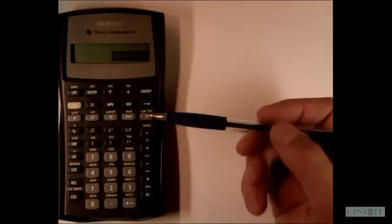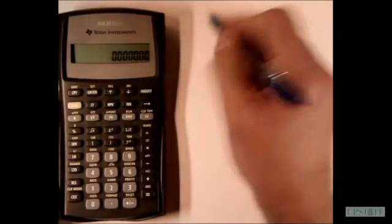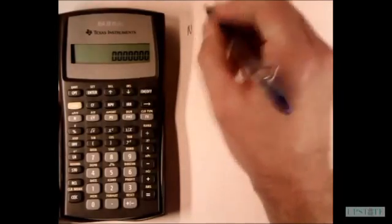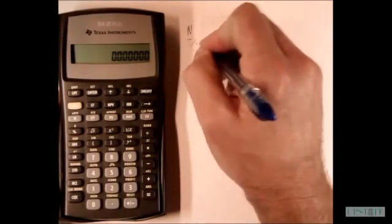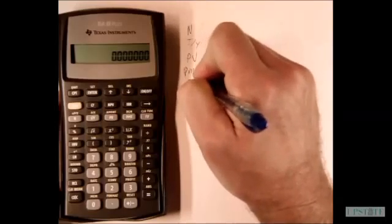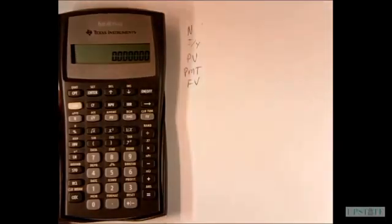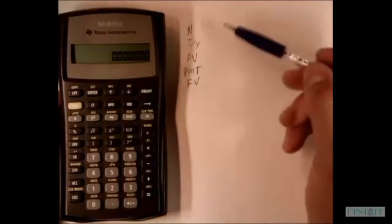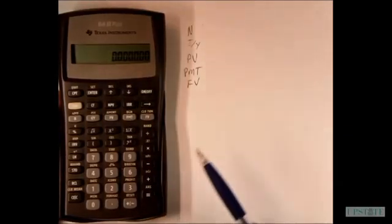Now one thing we have to keep in mind is that all of these buttons along here represent five variables. We have N, I over Y, PV, payment, and future value. This is basically setting up an equation with five variables.